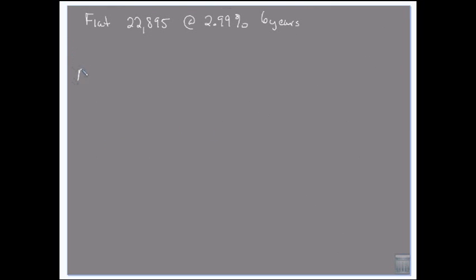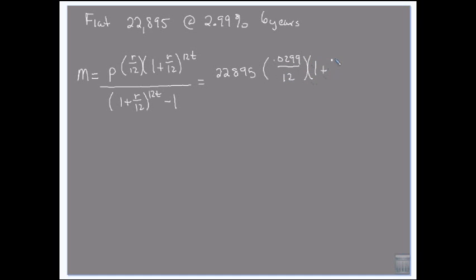So we have our monthly payment is going to be equal to the amount we're borrowing times the rate over 12 times 1 plus the rate over 12 raised to the power of 12t, over 1 plus the rate over 12 to the power of 12t minus 1. So we're borrowing $22,895. 0.0299 is our rate divided by 12. 1 plus 0.0299 divided by 12, 12 times 6.